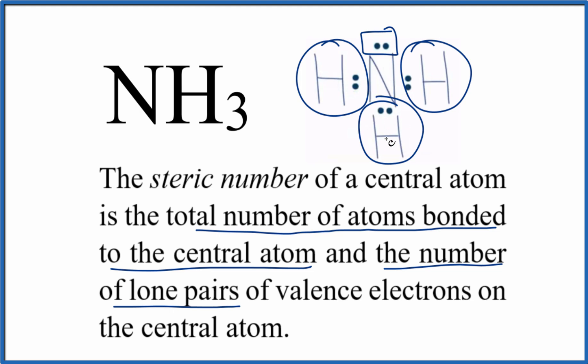So we have one, two, three plus one, that gives us four. So the steric number for NH3, ammonia, is four.